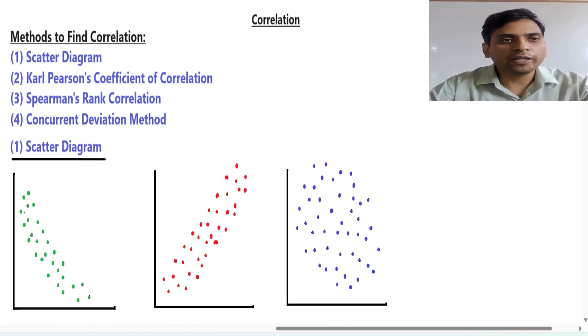So methods to find correlation, there are four methods basically. First is scatter diagram, second is Karl Pearson's coefficient of correlation, third is Spearman's rank correlation, and fourth is concurrent deviation method. Today we are focusing on this first method, the scatter diagram.